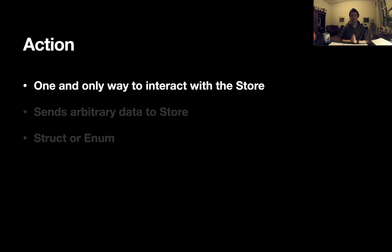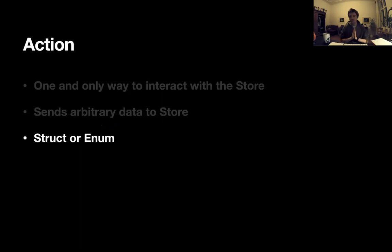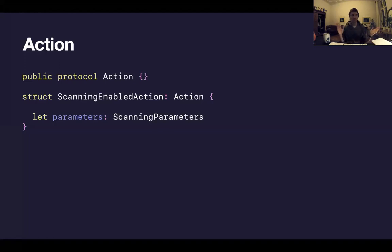First let's discuss what an action is. An action is the only way to interact with the store. The view can only send actions, and any other entity can only send actions to the store — this is the only way we communicate. This action can consist of arbitrary data and is represented by classes, structs, or enums. Action is just an empty protocol, so everything can conform to it. For example, here is a scanning enabled action which sends some parameters.